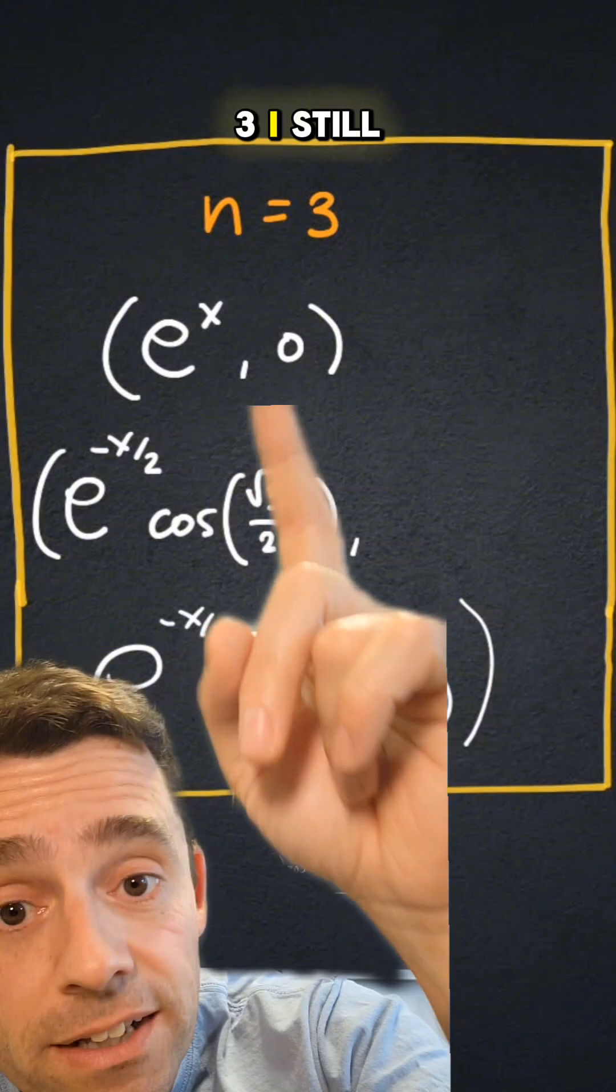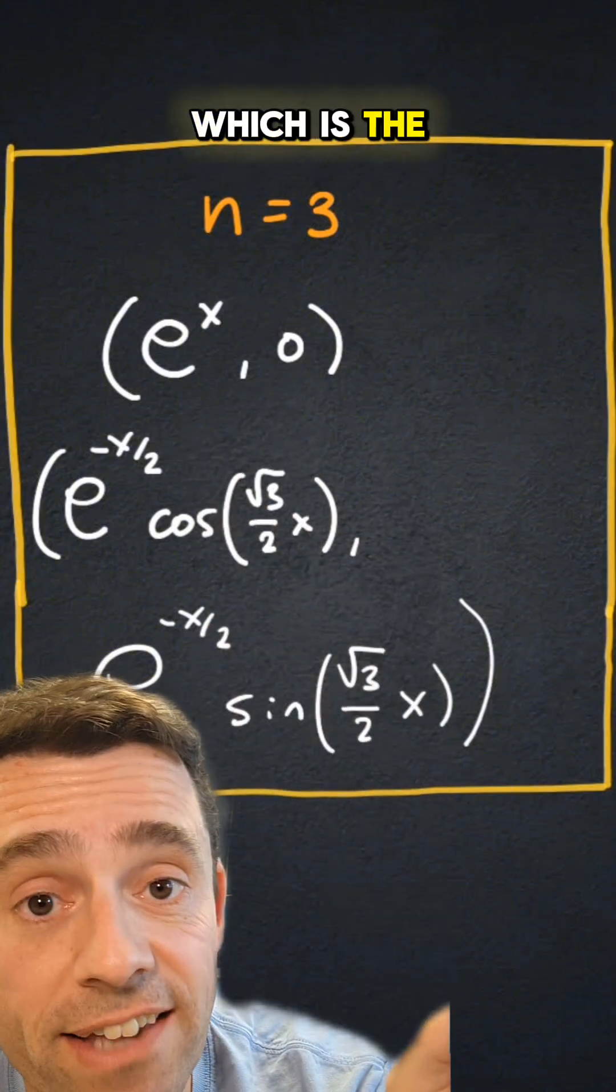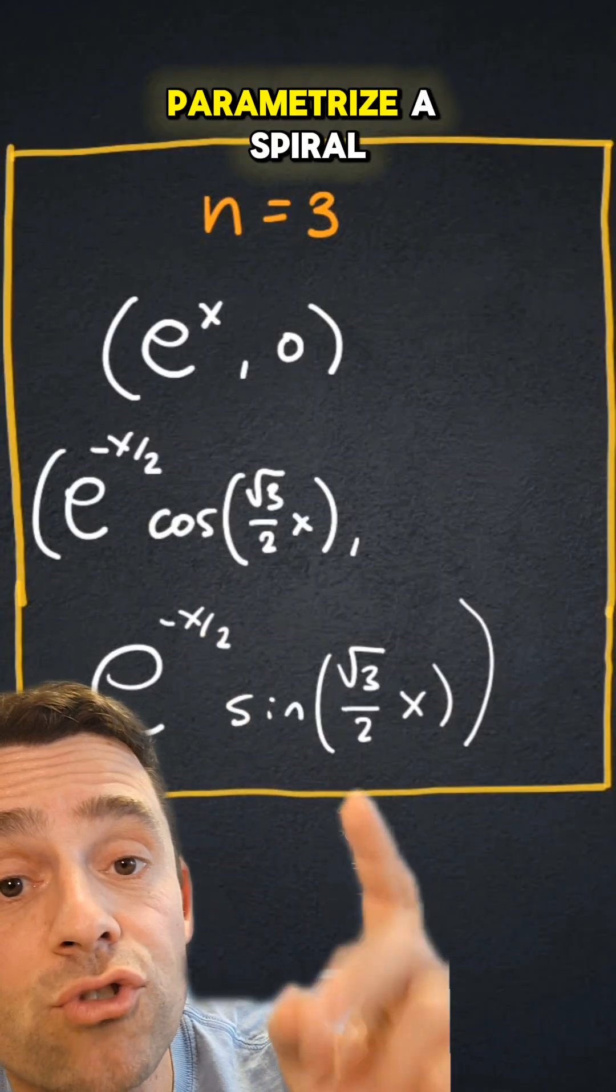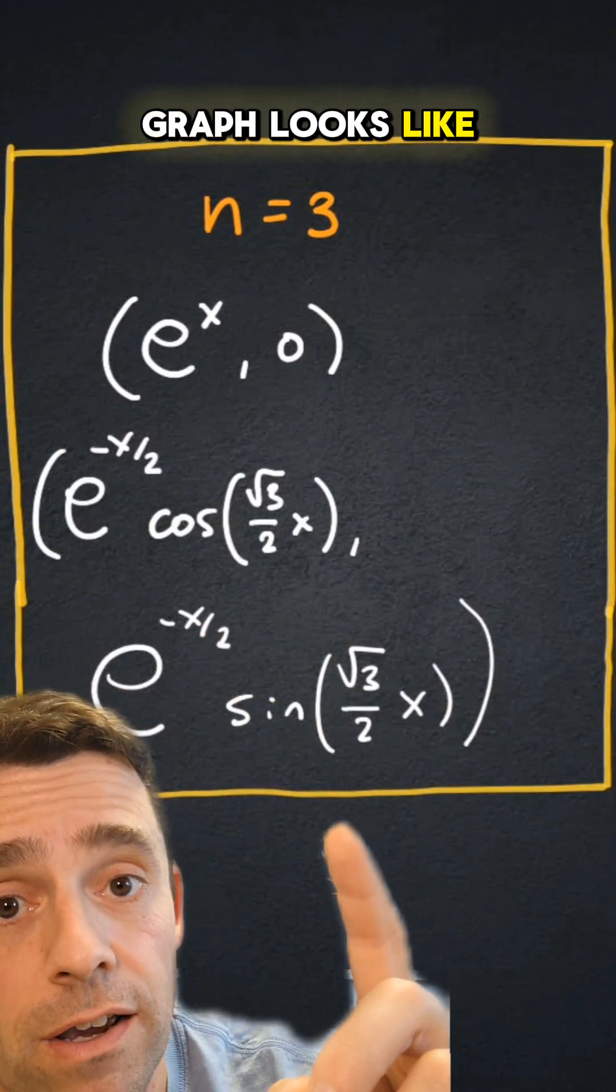For n equals 3, I still get one degenerate solution which is the x-axis, and then an actual spiral. These two functions parametrize a spiral, and I'll show you in a moment what the graph looks like.